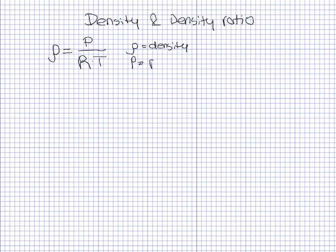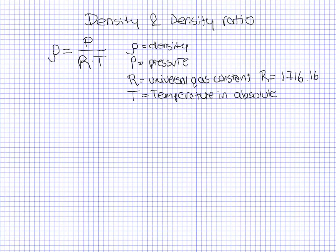P is the pressure, R is the universal gas constant with a value of 1716.16 and it does not have any units, and T is the temperature in absolute units.